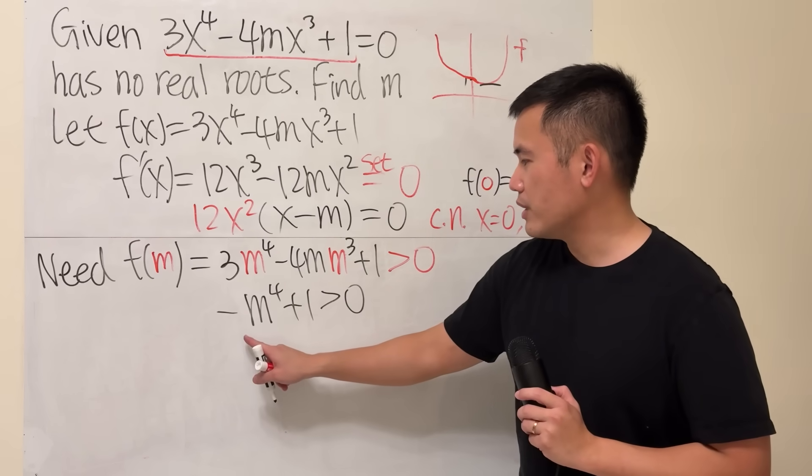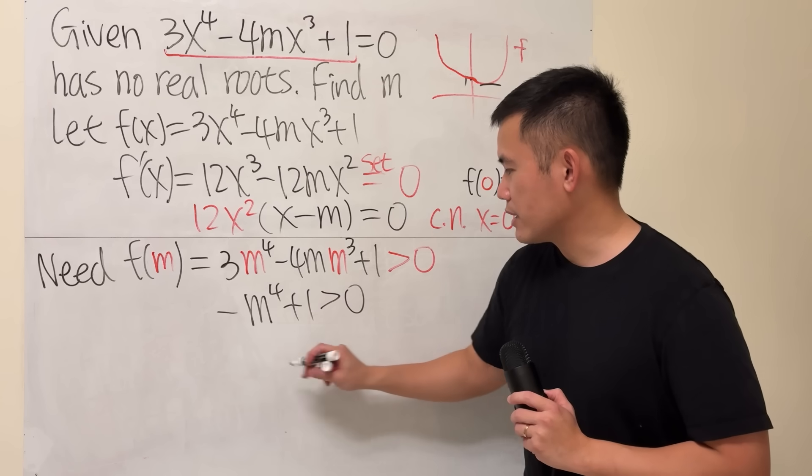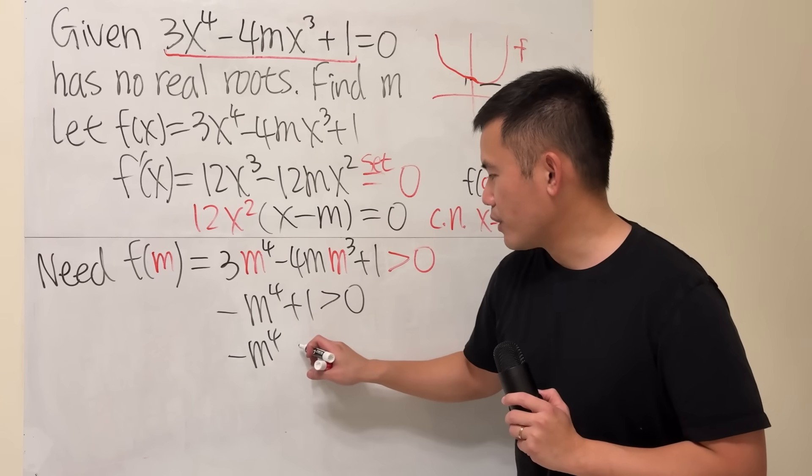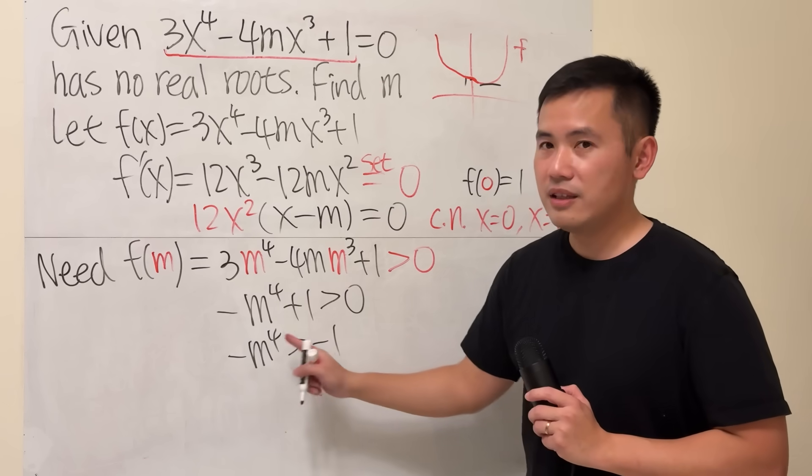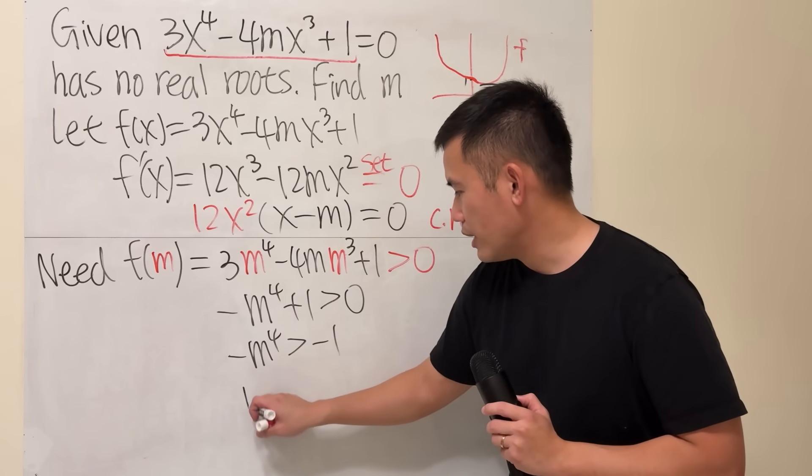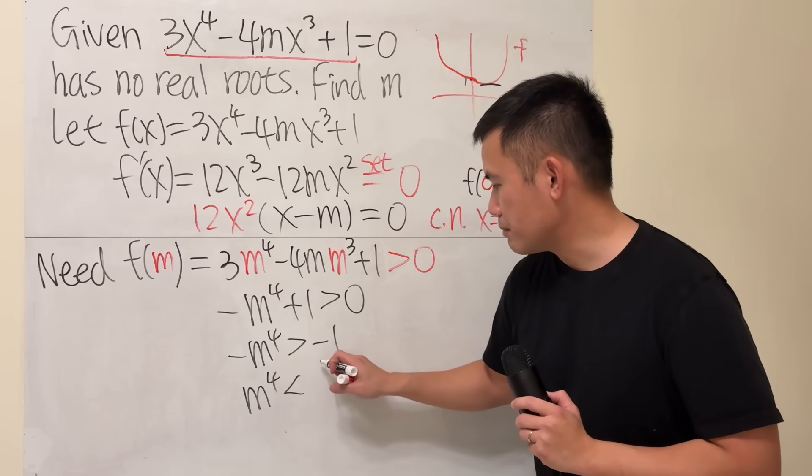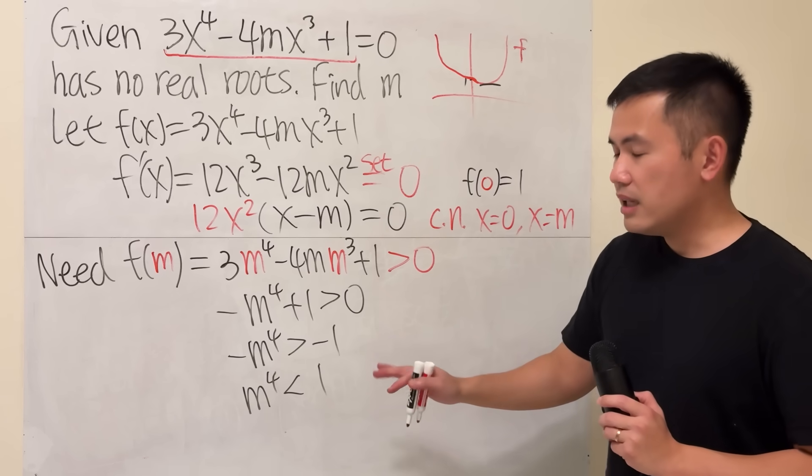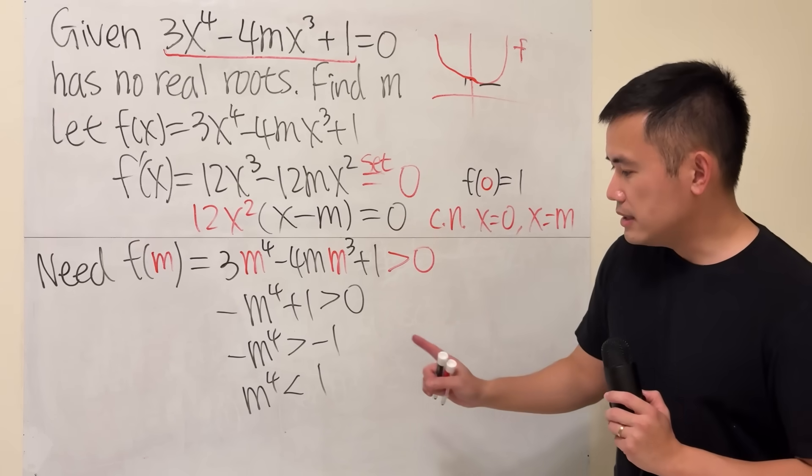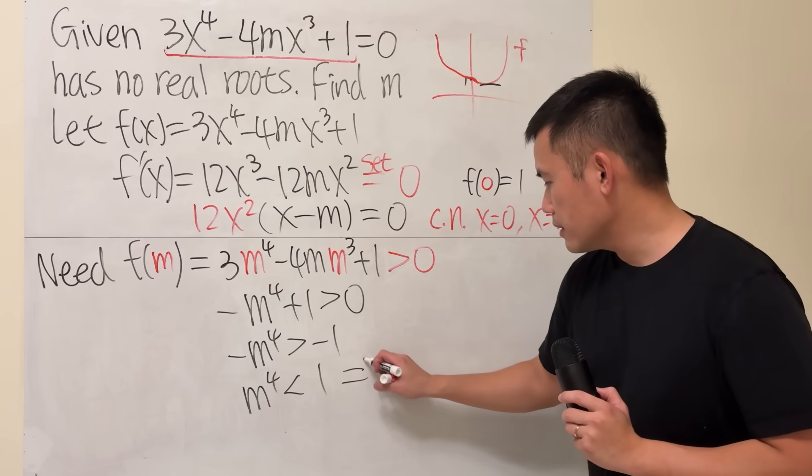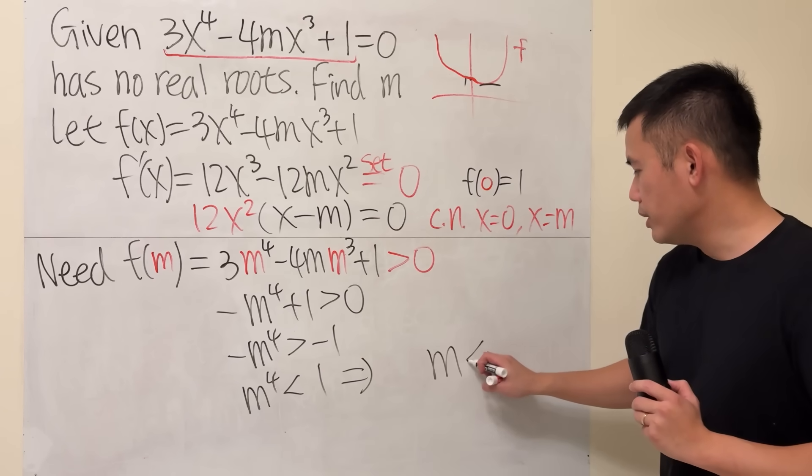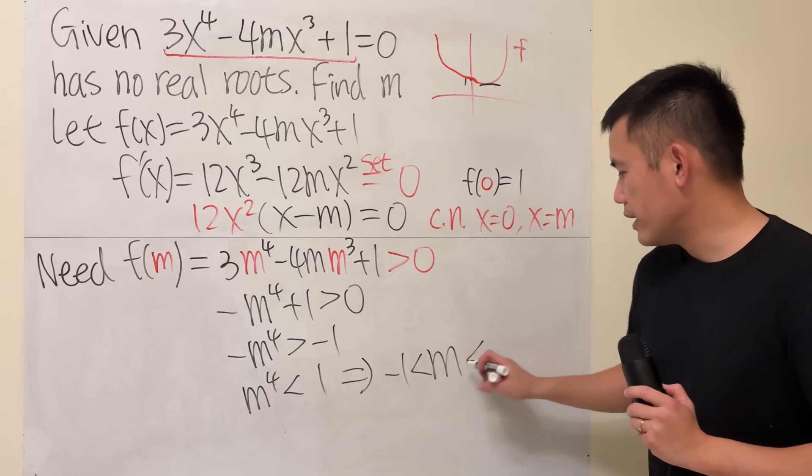Depending on how you want to solve it, you can move this to the other side: negative m to the fourth is greater than negative 1. Divide both sides by negative 1, so m to the fourth is less than positive 1. Then take the fourth root on both sides, but this implies that m is in between negative 1 and 1.